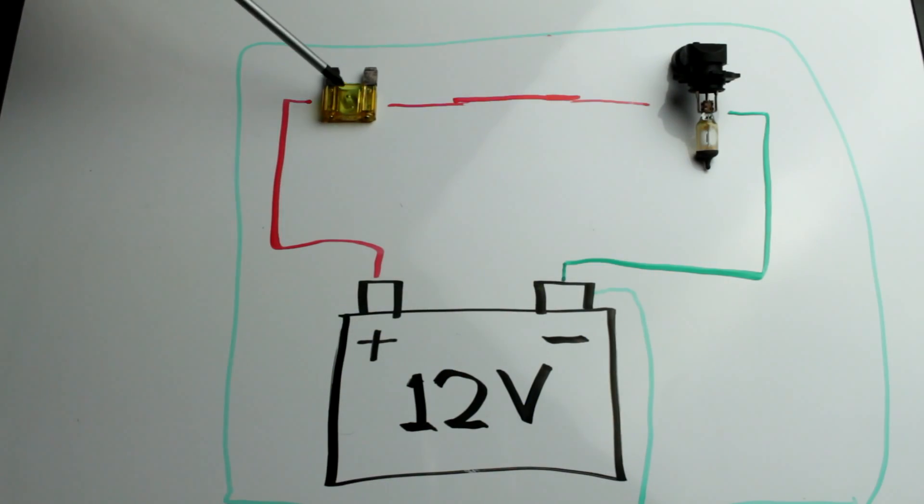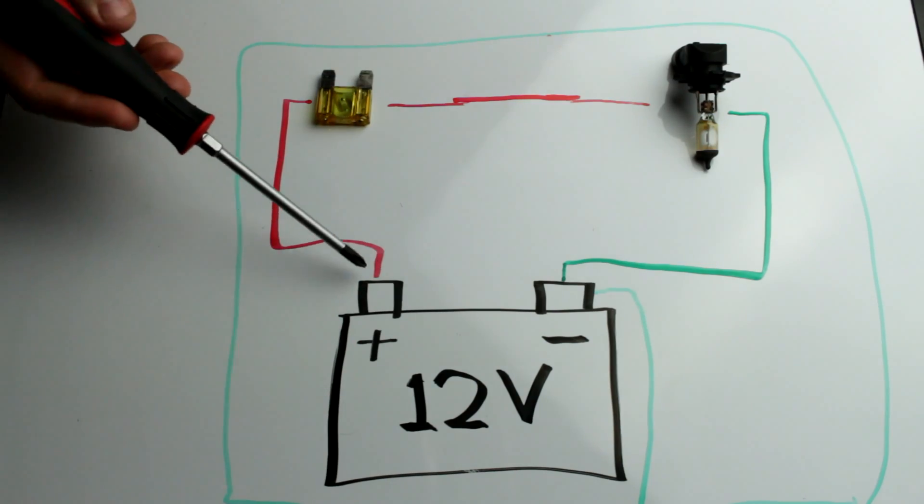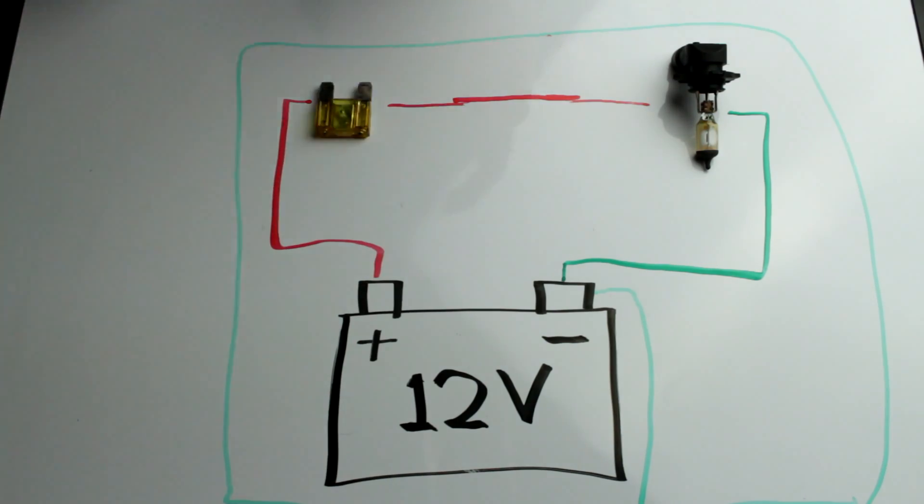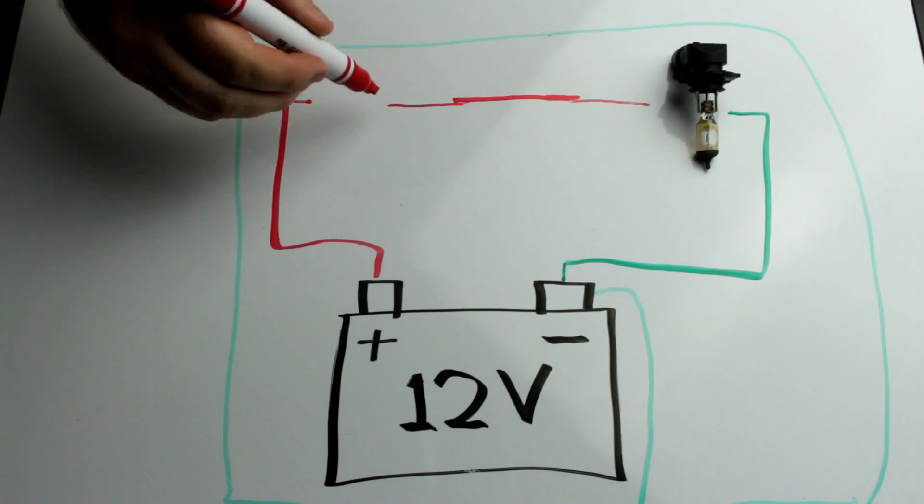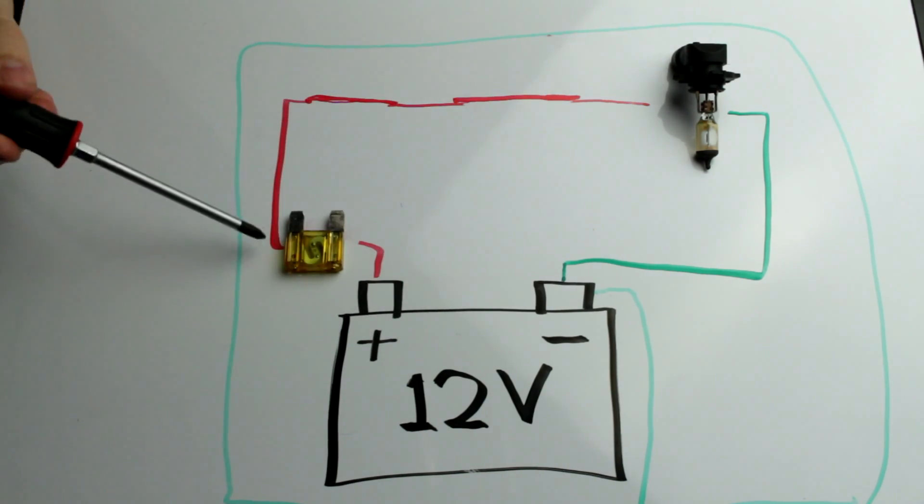Still with that in mind, the closer you can get your fuse to this positive post, the less unprotected circuit you end up with. So for safety's sake, let's relocate this fuse right here. From here to here is protected now when it wasn't before.